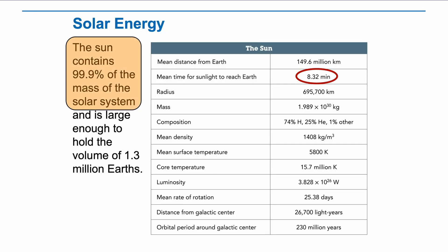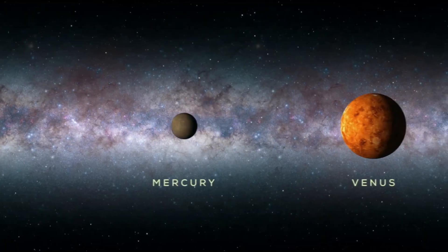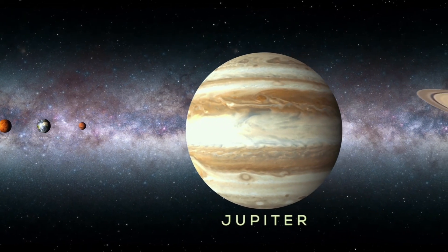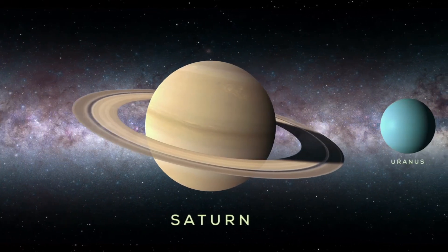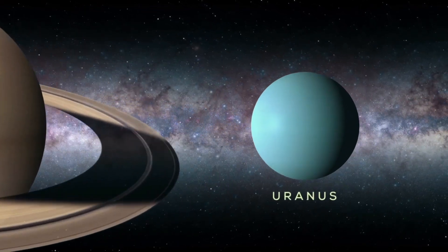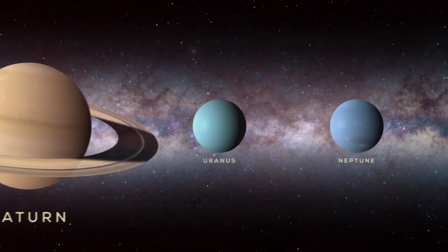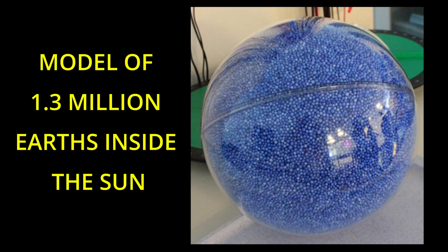As you can see on the slide, 99.9% of the mass of the entire solar system, which includes the mass of all the other planets and moons combined, comes from the Sun. Planets, moons, comets, and asteroids don't even account for more than 0.1% of the solar system's mass. In fact, the Sun is large enough to hold the volume of 1.3 million Earths.